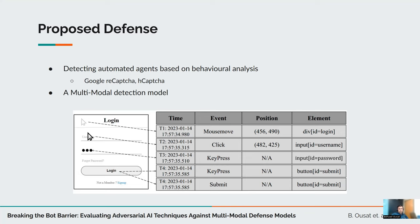In this work, we propose a multimodal detection model where we not only use mouse movement events, but also incorporate different kinds of events, including over 40 browser events such as clicks, keyboard events, and different types of events. As you can see in the form, there is a simple login scenario where the user moves the mouse, clicks on different fields of the form, types their credentials, and finally submits, resulting in a sequence of events. We take this sequence and use an LSTM model to train our detection model.